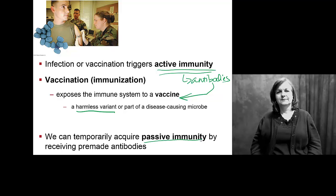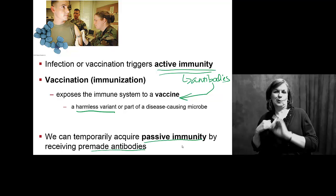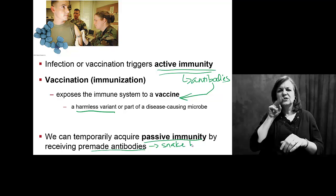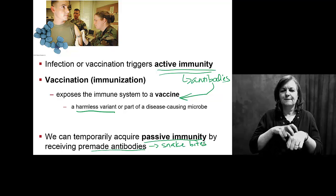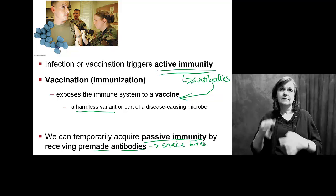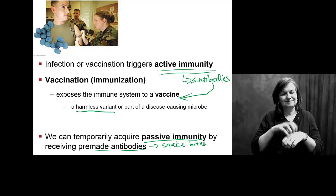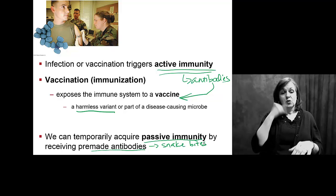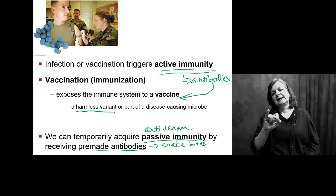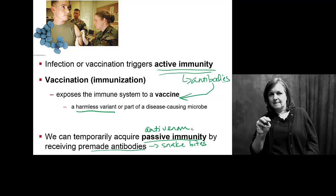We can have passive immunity if we give you premade antibodies — we don't wait for your system to build them. The times when we do this are like snake bites. If you need antivenom for a snake bite, and we actually waited for you to build antibodies to the snake venom, you'd be dead. We have to give you the antivenom very, very quickly. Antivenom is simply antibodies to that particular venom, and it's still very specific to a venom type.